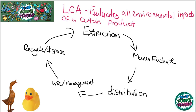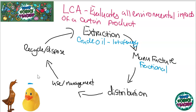The life cycle assessment will take into account the extraction, the manufacture, distribution, the use of the product, and the recycling and disposal of that product. I have two ducks — one that's a rubber duck and one that is a wooden duck. If I was to do a life cycle assessment of this rubber duck, I'd probably find that it was extracted from crude oil as it is plastic. And crude oil extraction happens underground — it's often quite a lot of energy needed to drill that far down. The manufacture of it will involve separating that crude oil maybe by fractional distillation and also then heating in order to make the polymer that's needed.